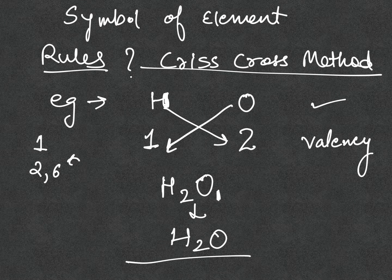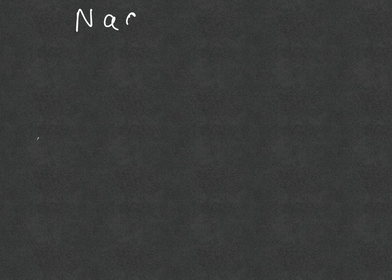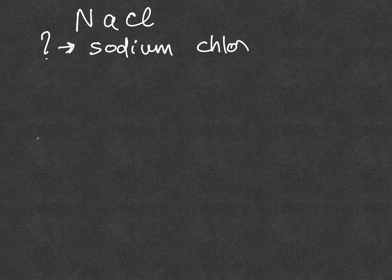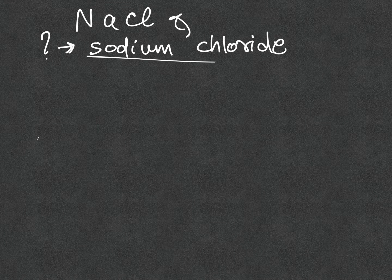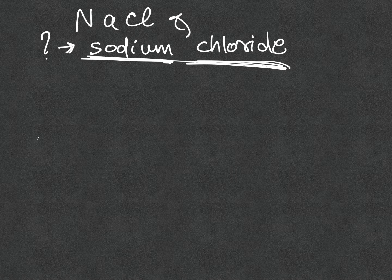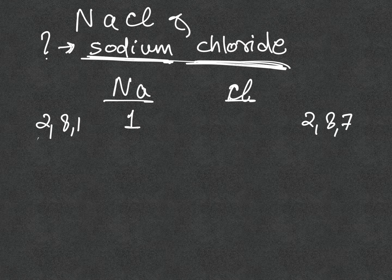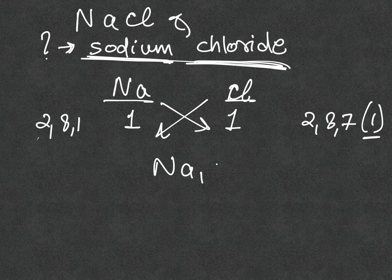Let's look at NaCl. When asked to write the chemical formula of sodium chloride, remember: the cationic part is written first, then the anionic part. The symbol for sodium is Na and for chloride is Cl. Sodium has configuration 2,8,1 so its valency is 1, and chlorine has configuration 2,8,7 — it gains one more electron — so its valency is also 1. After crisscrossing we get Na¹Cl¹; since we don't write 1, the chemical formula is NaCl.